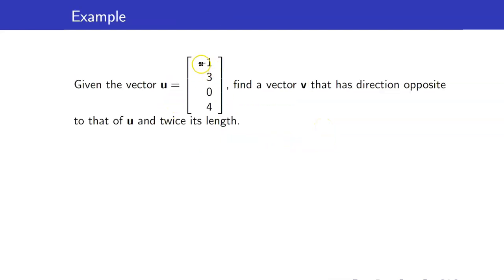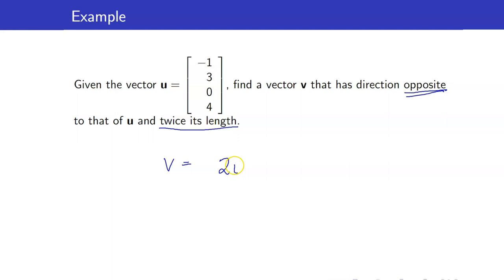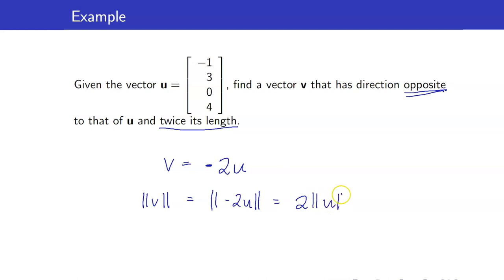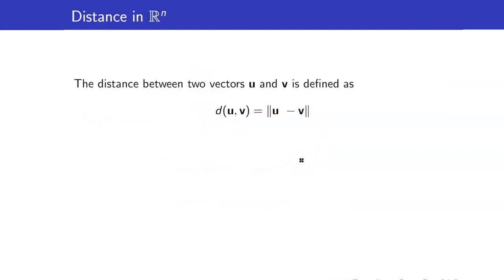For instance, our vector u is negative 1, 3, 0, 4. Find the vector v that has a direction opposite to that of u and twice its length. Since opposite directions require a negative scalar and twice the length means a factor of 2, we use v equals negative 2u, which gives 2, negative 6, 0, negative 8.